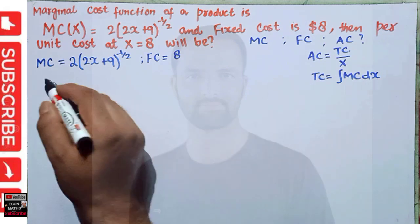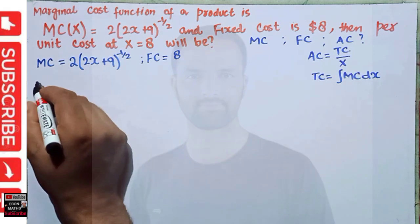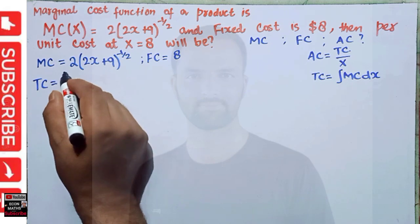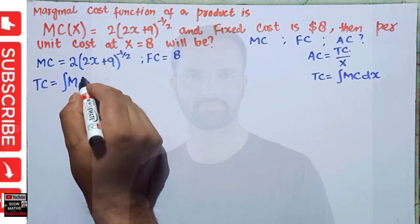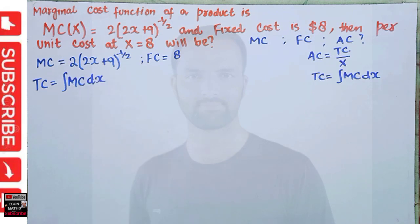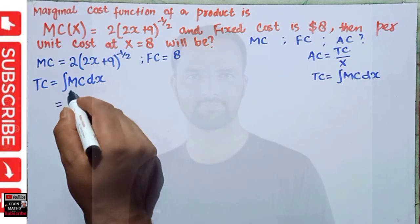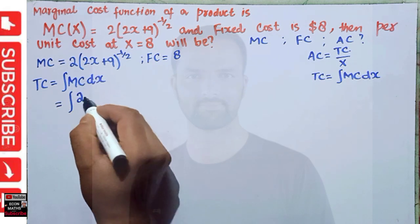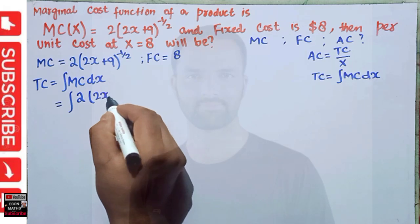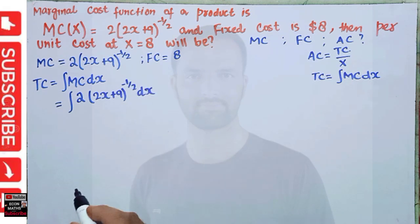So to find the average cost, we first need to find the total cost. Total cost is given by the integral of the marginal cost with respect to x. Now how do we integrate the given function? We have to integrate 2(2x + 9)^(-1/2) dx.